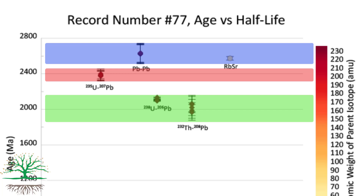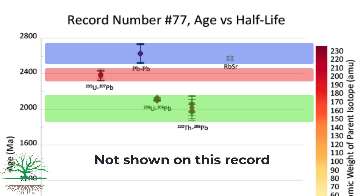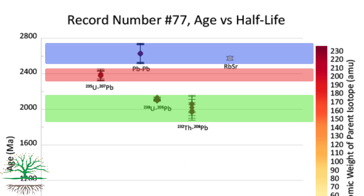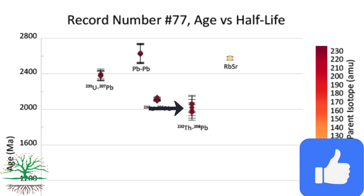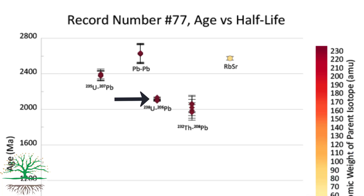Notice that these error bars do not cross any of the other isotope systems. As you increase the number of different systems, the amount of discordance actually increases. Interestingly, the same system is highly concordant relative to itself — for example, the same system was used to obtain three separate ages that are all concordant with each other, compared to how discordant the different radioisotope systems are to each other. There are also two different ages using the same system that are so concordant they are nearly on top of each other.